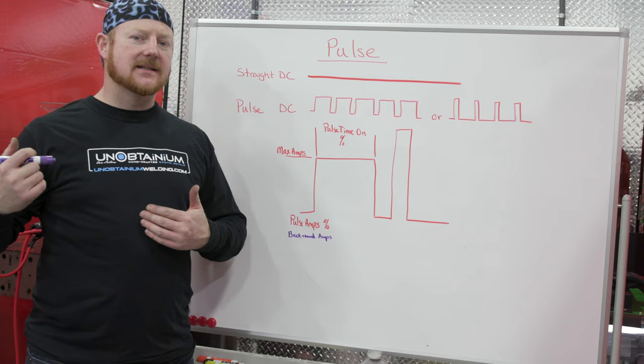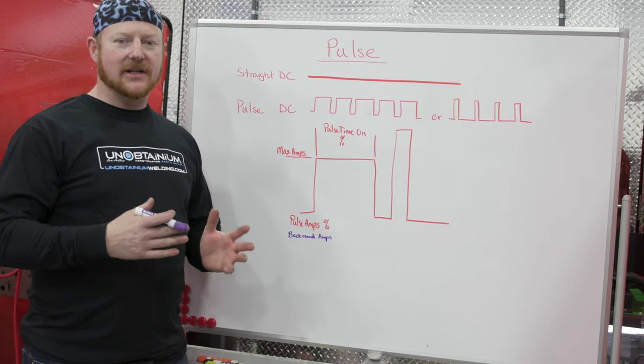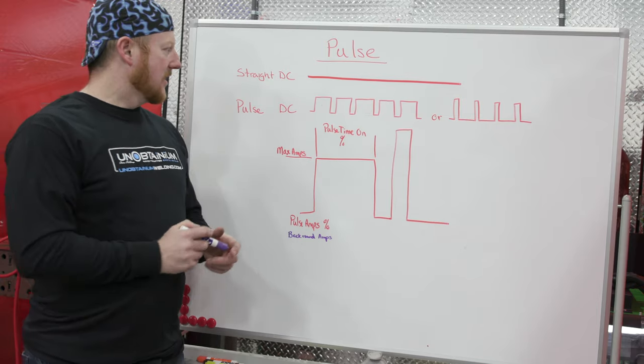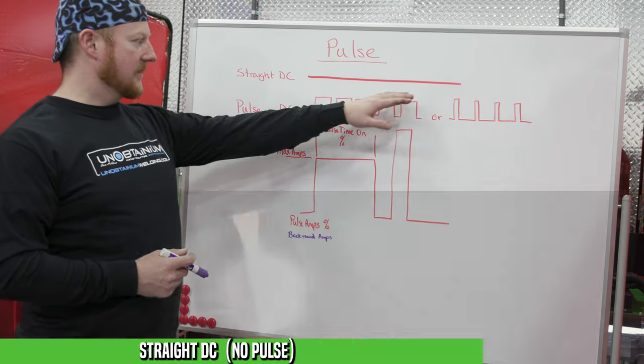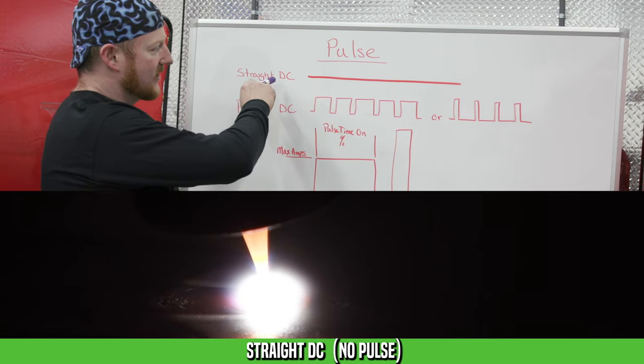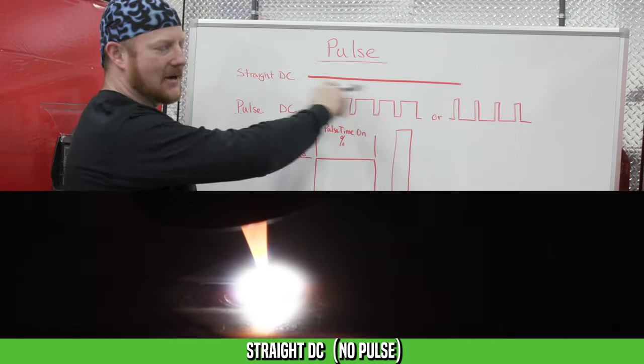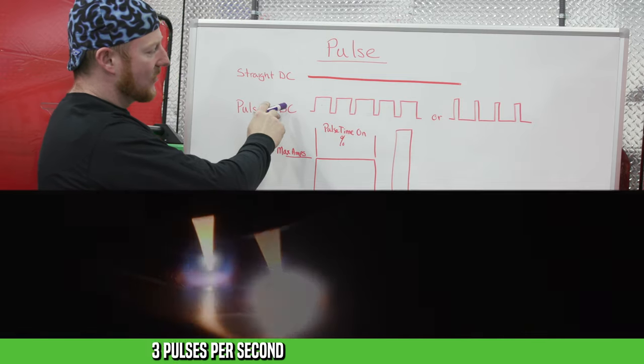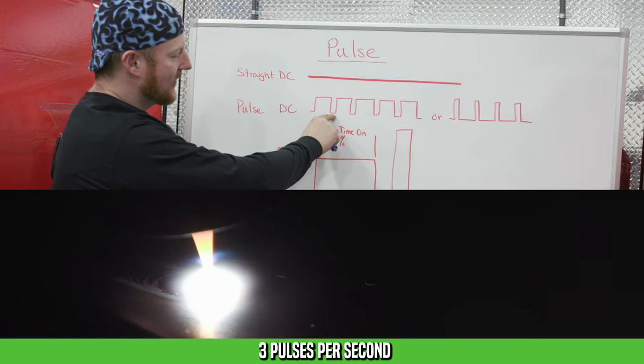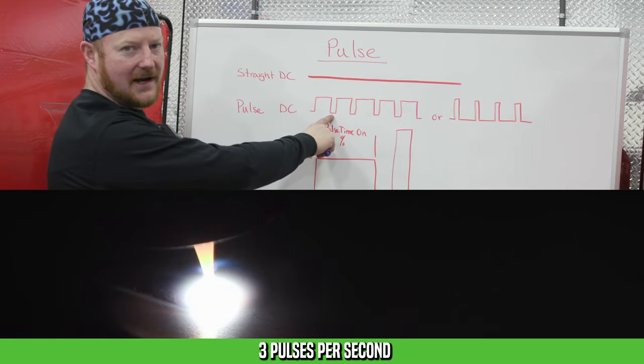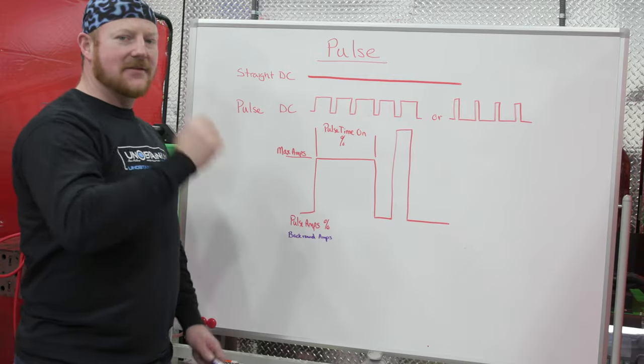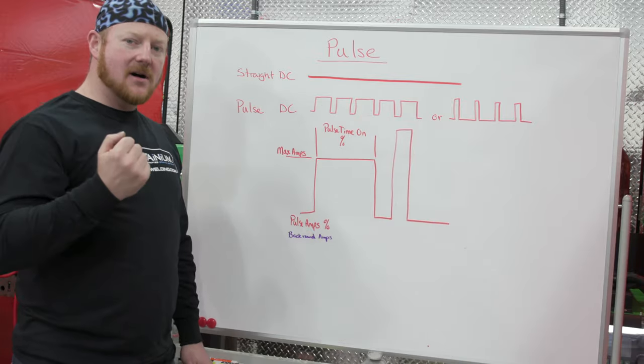Before we get into the machine settings, let's talk about what pulse actually is. What is it doing and why do we care? So our straight DC current is basically a straight line. If we ask for 70 amps, we get 70 amps. But with pulse, we're allowed to have these small spikes and then this off time, where we don't have the maximum amperage for it to cool down. So we can have this blast of amperage and some off time.